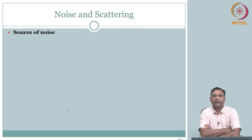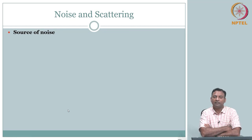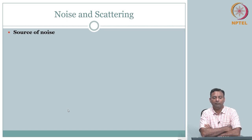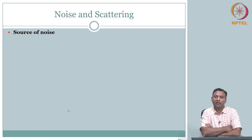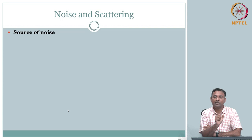Let us get to the business. When we talk about image quality, first and foremost we want to talk about what we mean by noise and scattering. Compton scattering — you might easily spot it. We will come to scattering after we completely deal with noise. Scattering will be towards the end of this module.